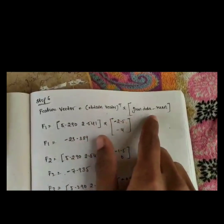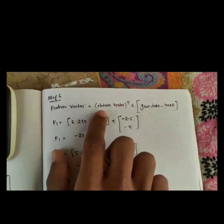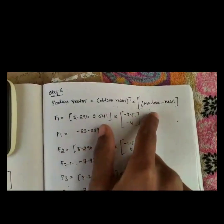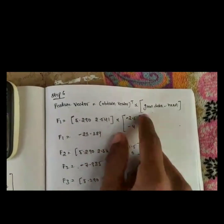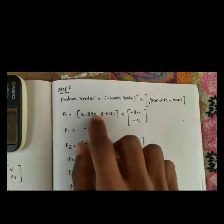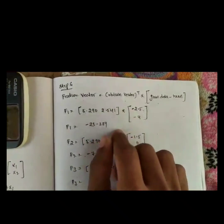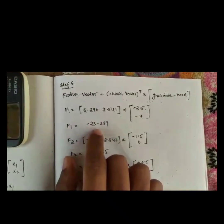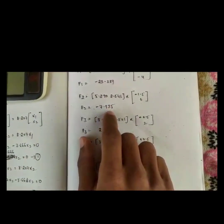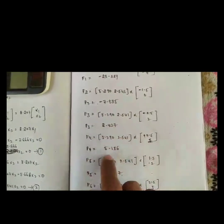Step six is finding the feature vector using the formula: obtained eigenvector transpose multiplied by (given data minus mean). We take the eigenvector transpose and multiply by the centered data values obtained in step three. Computing the matrix products, we get feature values: F1 equals −23.389.